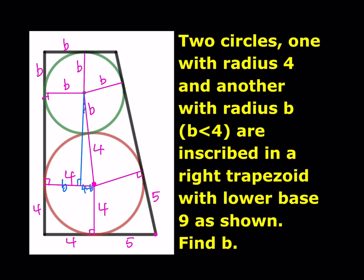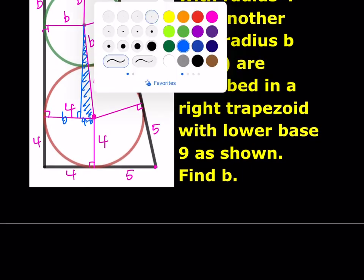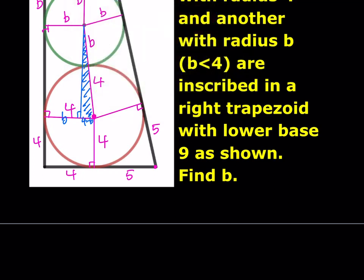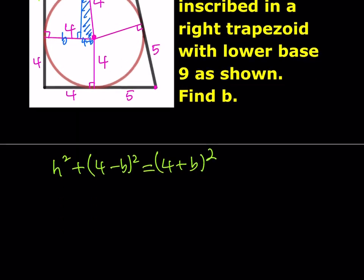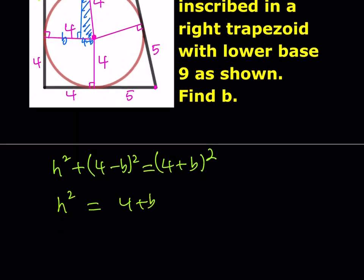Using the Pythagorean theorem, we can write h² + (4 − b)² = (4 + b)². You'll remember this identity: (x+y)² − (x−y)² = 4xy. So h² = (4+b)² − (4−b)² = 4·4·b = 16b. If we take square roots of both sides, h can be written as 4 times the square root of b. This is very helpful because it expresses h in terms of b.